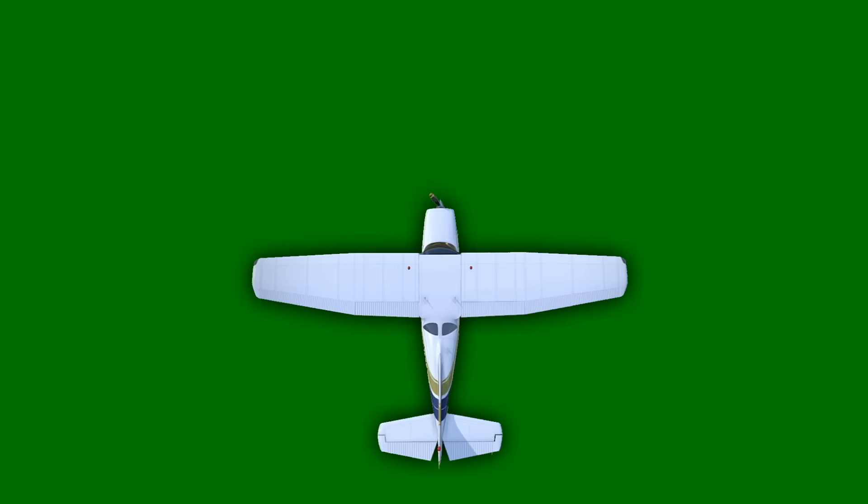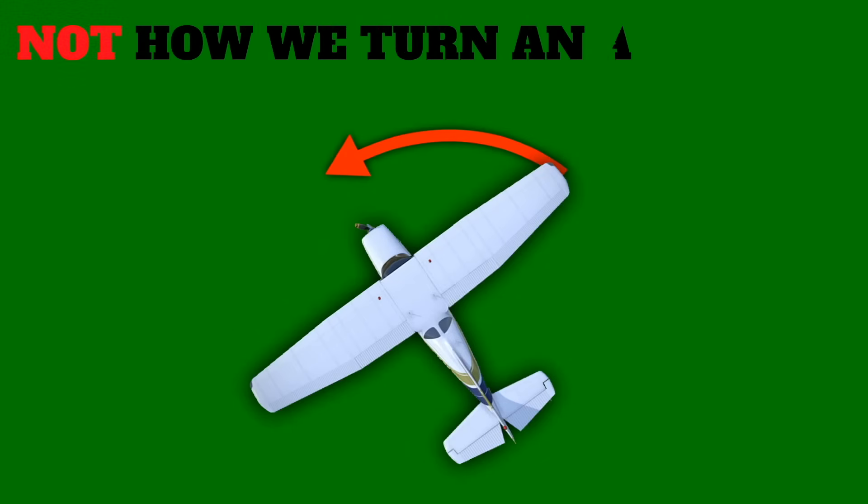When you look at a two-dimensional picture of an airplane like this your first inclination might lead you to believe that we turn an airplane by yawing the aircraft one way or another but this is actually not the case.